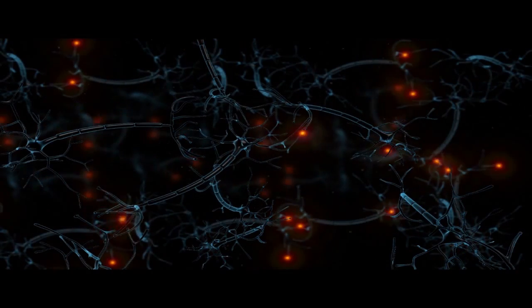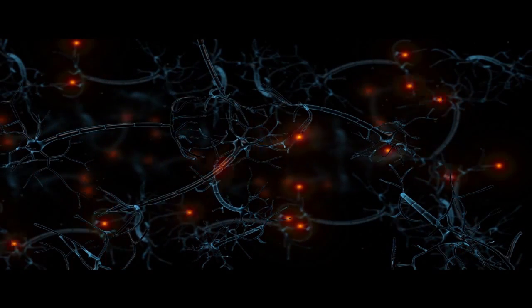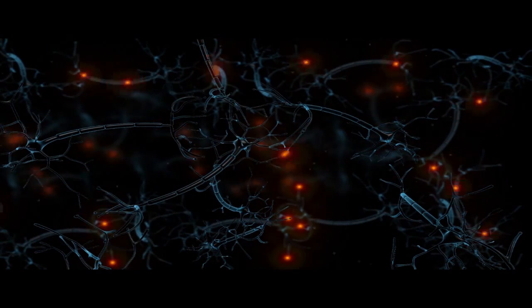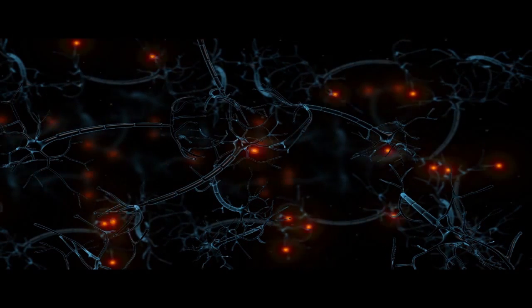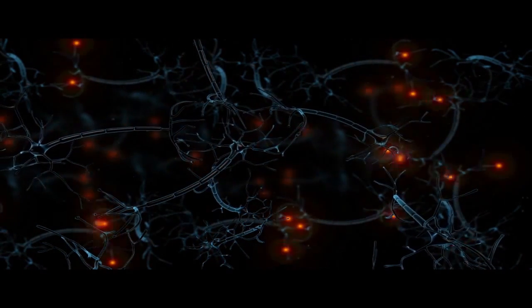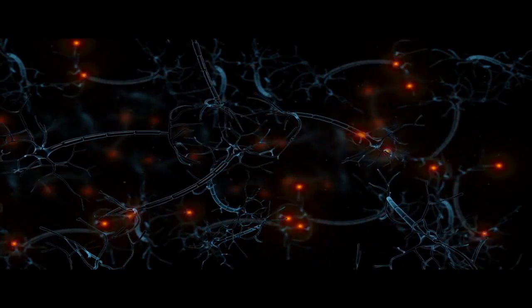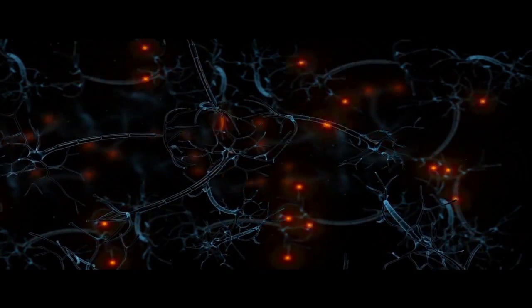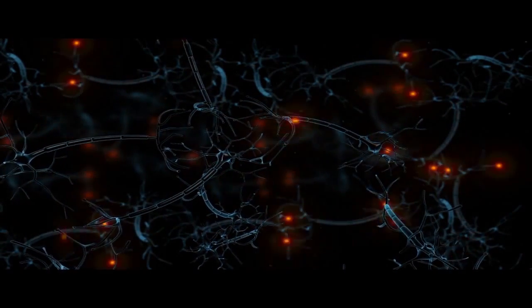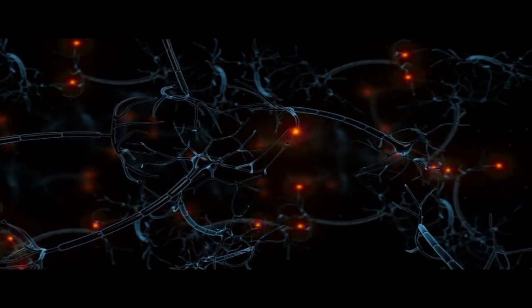The brain is made up of a vast network of specialized nerve cells called neurons. There are about 100 billion neurons in the average human brain. Neurons communicate with each other by sending chemical signals, known as neurotransmitters, to one another.